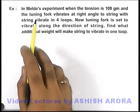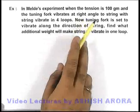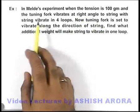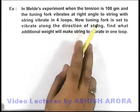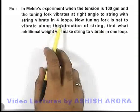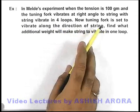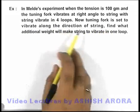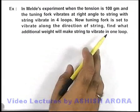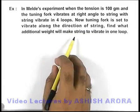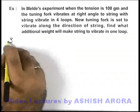In this example, we are given that in Melde's experiment when the tension is 100 grams and the tuning fork vibrates at right angle to the string, it vibrates in four loops. Now tuning fork is set to vibrate along the direction of string. We are required to find what additional weight will make the string vibrate in one loop.